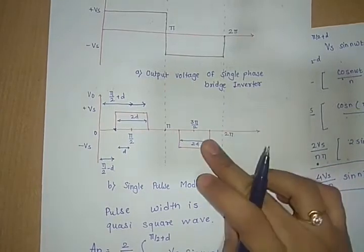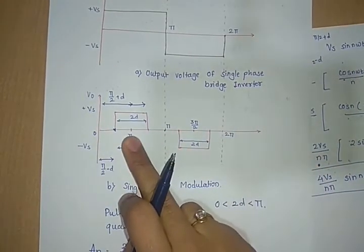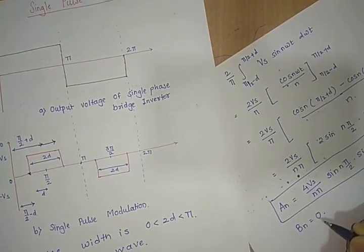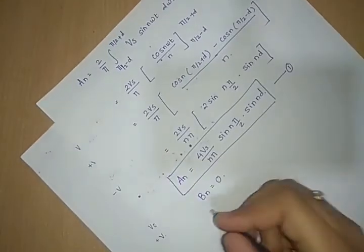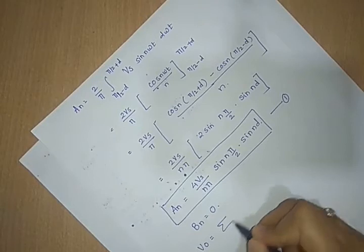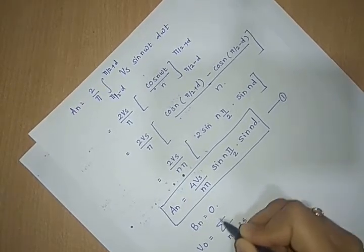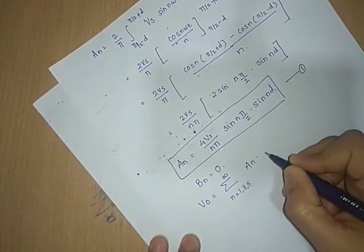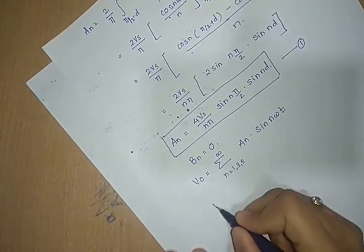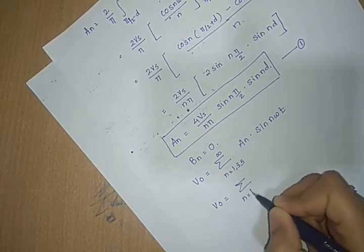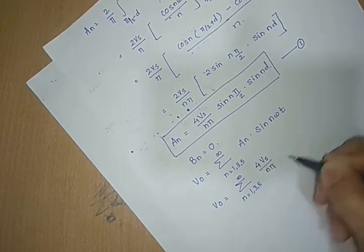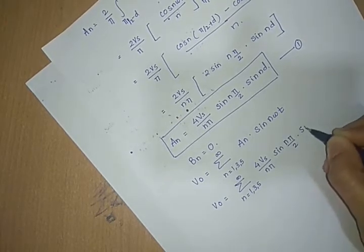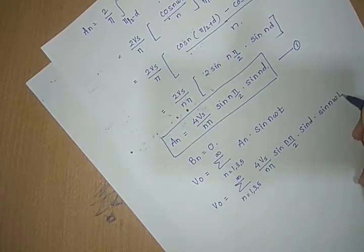The positive and negative half cycles of Vout are symmetrical about π/2 and 3π/2 respectively, so the coefficient Bn = 0. Thus the output voltage waveform can be described by the Fourier series as: Vout = summation from n = 1, 3, 5 to infinity of (4Vs / nπ) × sin(nπ/2) × sin(nd) × sin(nωt).